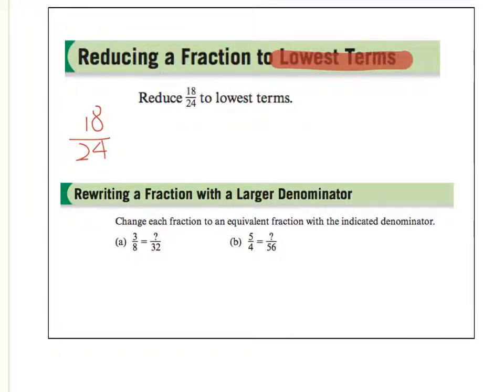To reduce a fraction to its lowest terms, it means that the numerator and the denominator must have no common factors. So the way to do it is to make sure that you factor the numerator and the denominator with all prime factors. So 18 can be factored into 2 times 9. 9 obviously is not a prime factor, so we can further factor 9 into 3 times 3. 24 can be factored into 2 times 12, and 12 is not a prime number, so I can rewrite 12 into 2 times 6. 6 is not a prime number, so I'm going to rewrite 6 into 2 times 3.